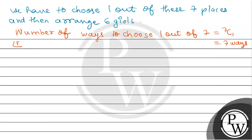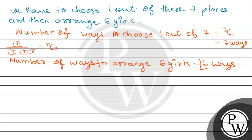We have NCR equals factorial N divided by factorial R multiplied by factorial N minus R. Now, number of ways to arrange 6 girls is factorial 6 ways.